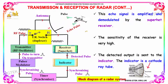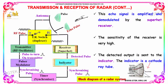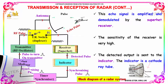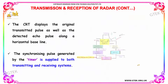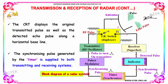This echo signal is amplified and demodulated by the superheterodyne receiver. The sensitivity of the receiver is very high. The detected output is sent to the indicator, which is a cathode ray tube (CRT).